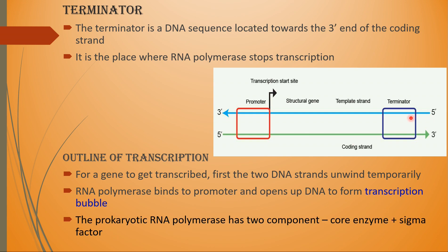The third part of the transcription unit is the terminator. It is a DNA sequence located towards the 3 prime end of the coding strand. The terminator is the place where RNA polymerase stops transcription. RNA polymerase attaches to the promoter to initiate transcription and attaches to the terminator to stop transcription.